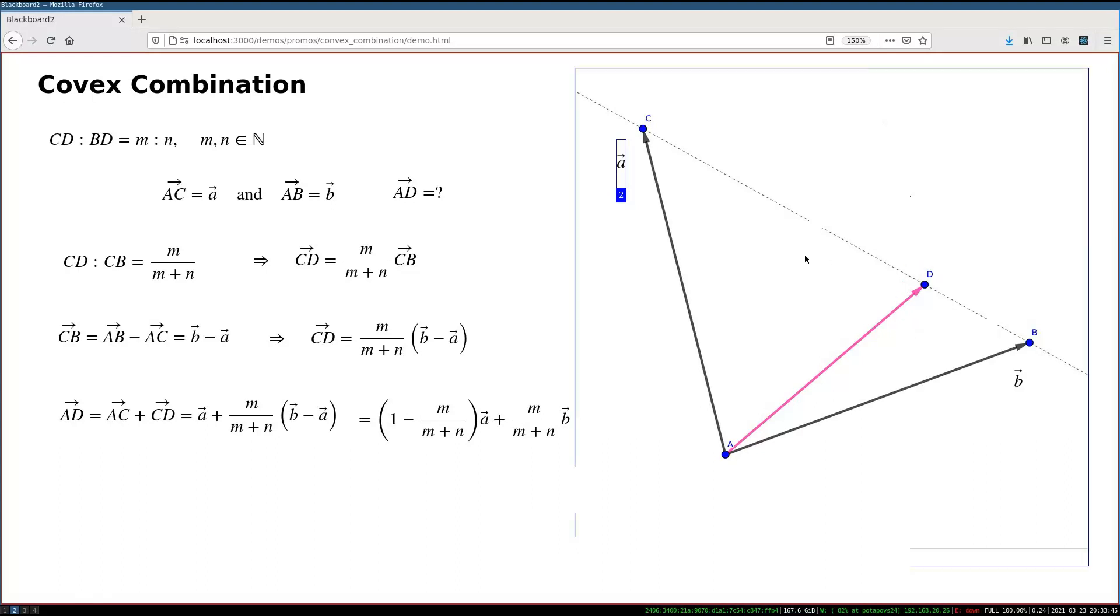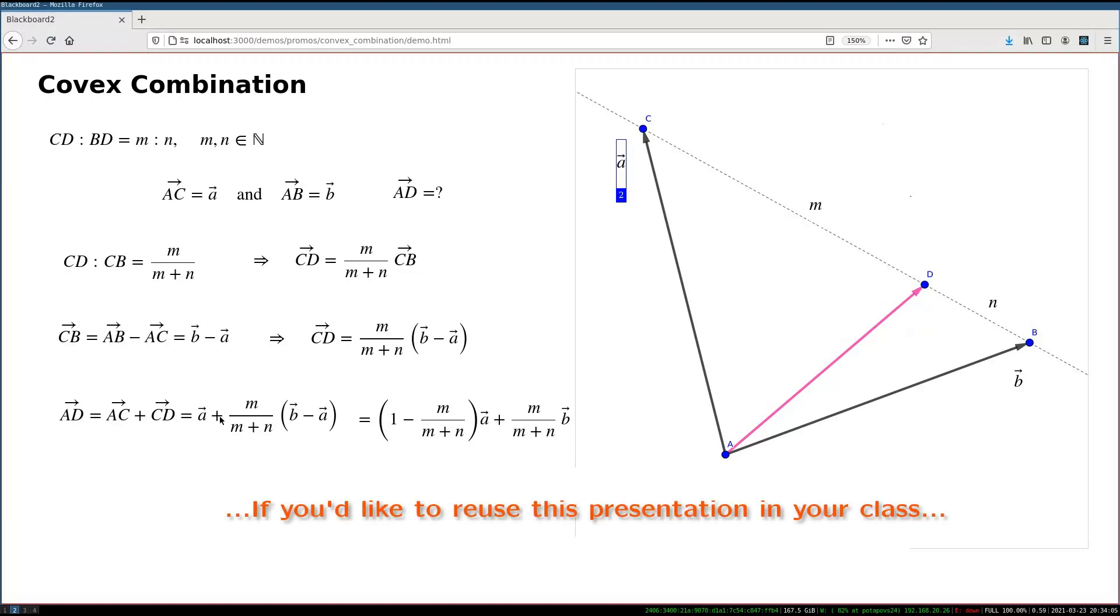If I aim, let me repeat this, if I aim to find a point D, which splits my given segment in given proportions, so I will need to have M parts here, and N parts here, the answer to this, in vector terms, meaning AD vector, is given by the following expression.